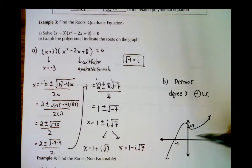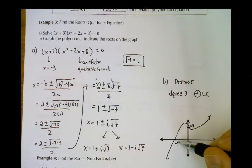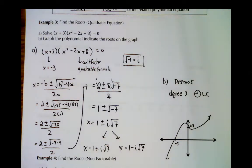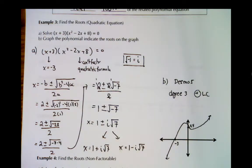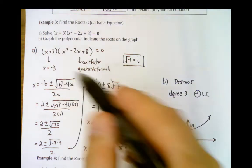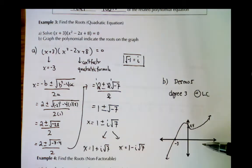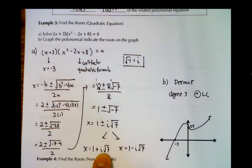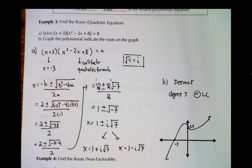The only parts you could tell me about the graph are the x-intercept at negative 3, the y-intercept at 24, and the two end behaviors — you'd need Desmos to complete the rest. But algebraically, you can find the roots of negative 3 and the two complex roots. So we have three roots: one real which gives an x-intercept, and two complex which don't. Complex roots always come in pairs due to the plus or minus.